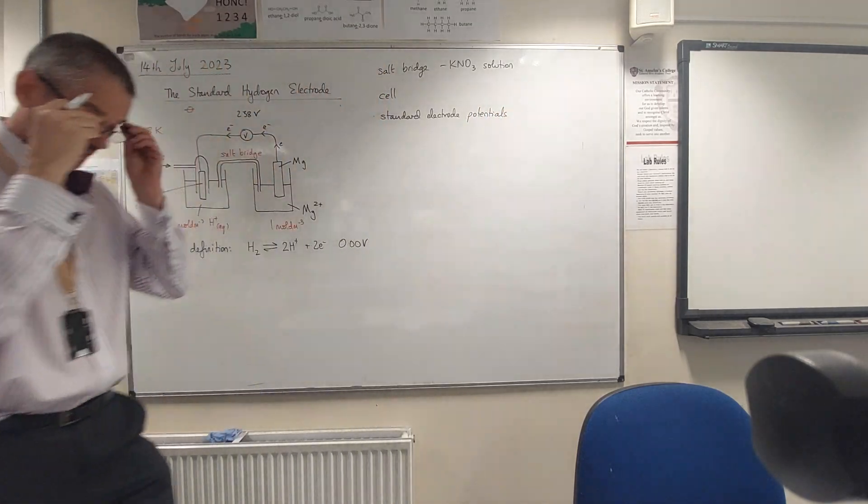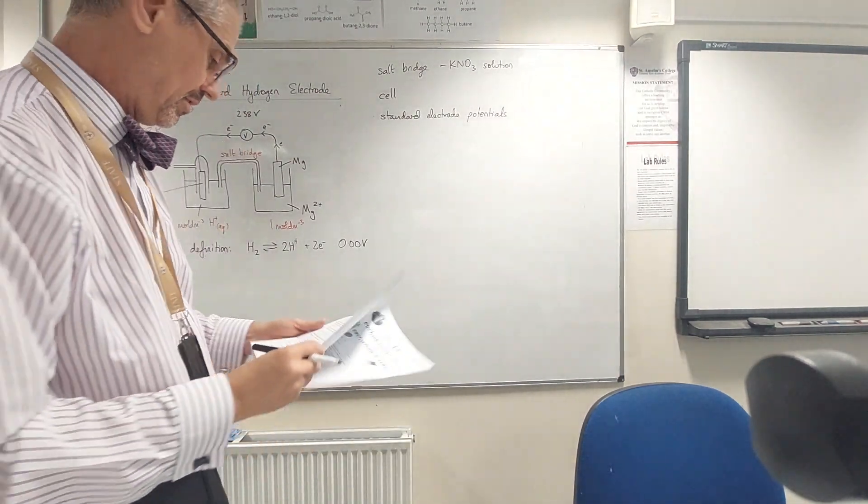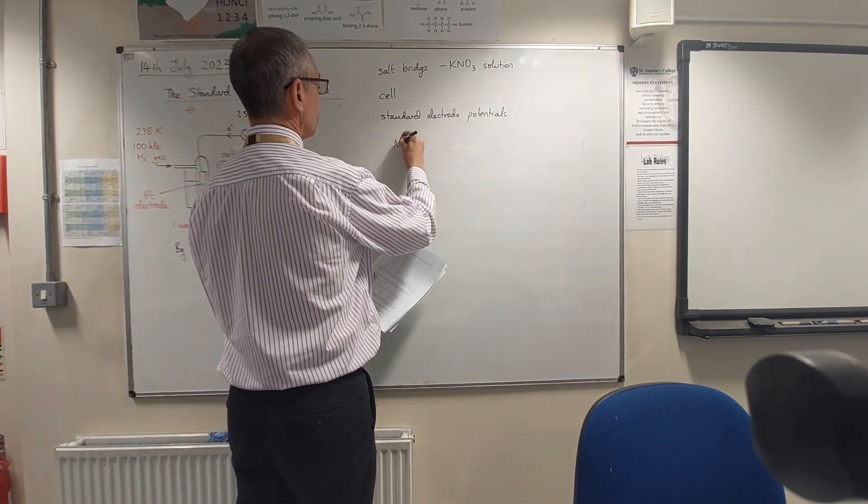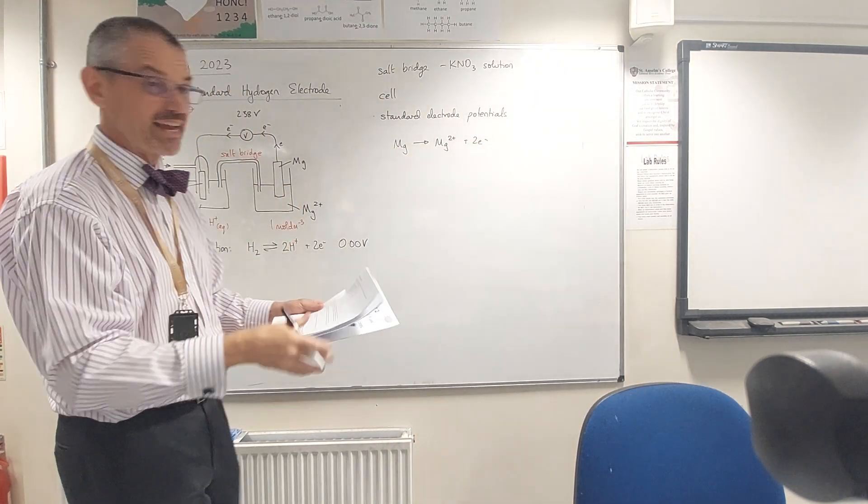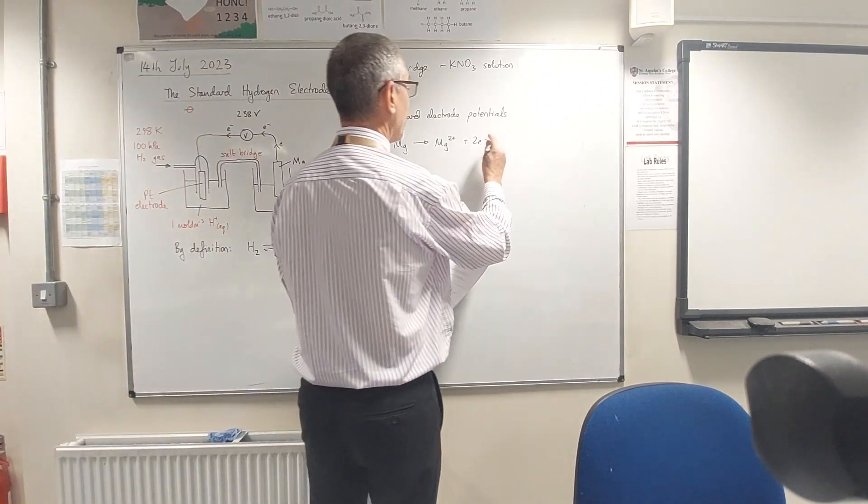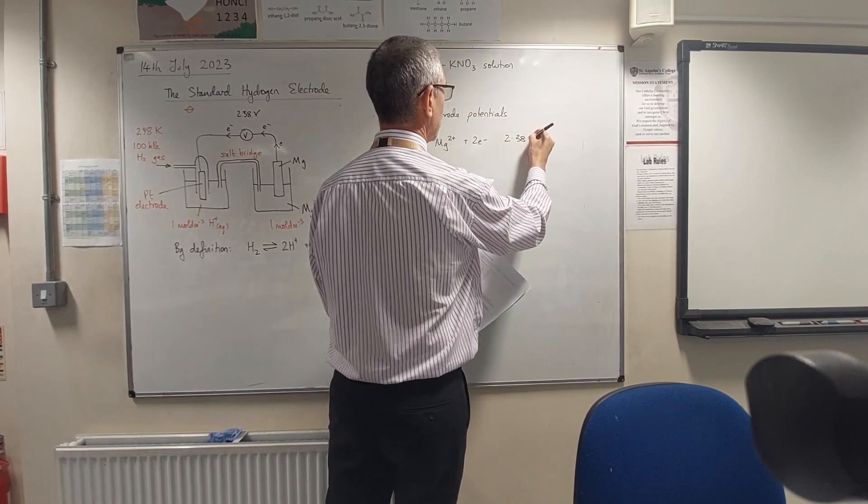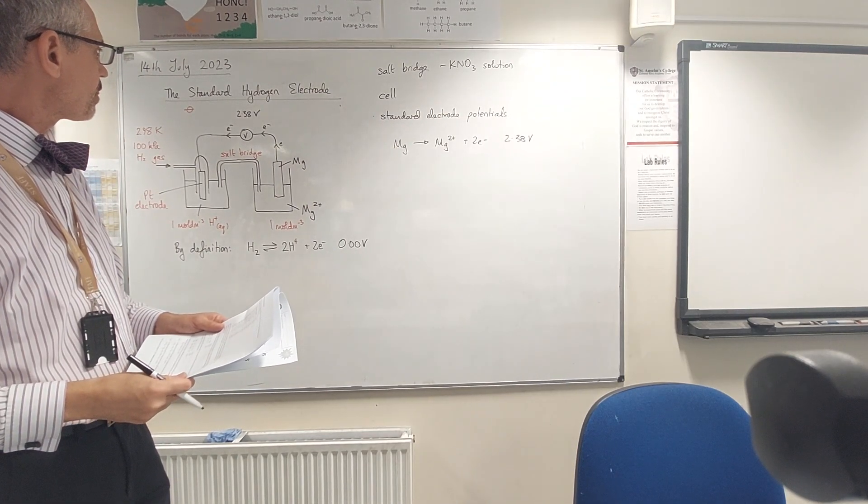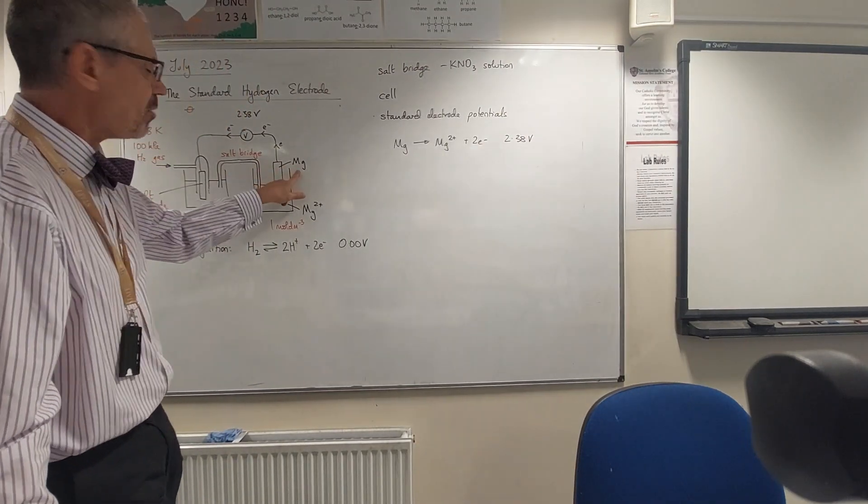Okay, so if I look at magnesium - magnesium 2+, that's what's going on here. Magnesium is a pretty reactive metal, so it's more reactive than hydrogen, and that is giving off 2.38 volts. I just need to be a little bit careful though, because if I put copper in here, how would things be different?